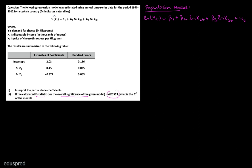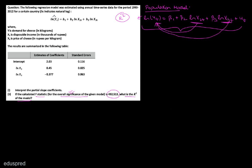Moving to part two: if the calculated F statistic for overall significance of the given model is a certain value, what is the R-squared of the model? Overall significance means we are testing whether this model is of any use — whether X2 has any impact on log Yt and whether X3 has any impact. The null hypothesis is beta 2 equals beta 3 equals 0.